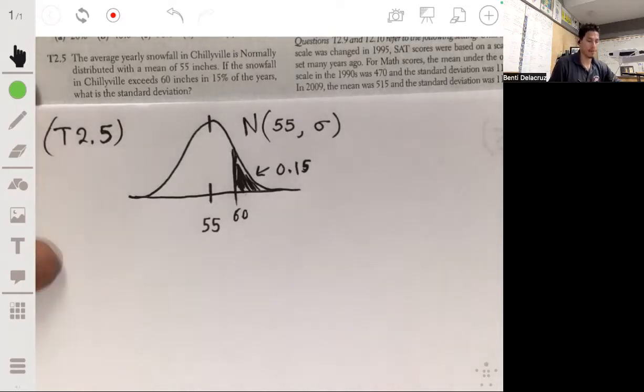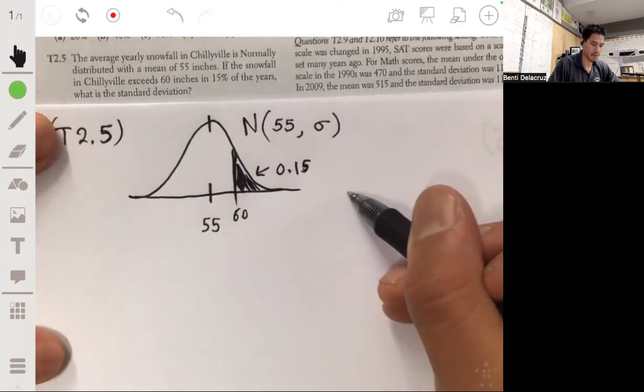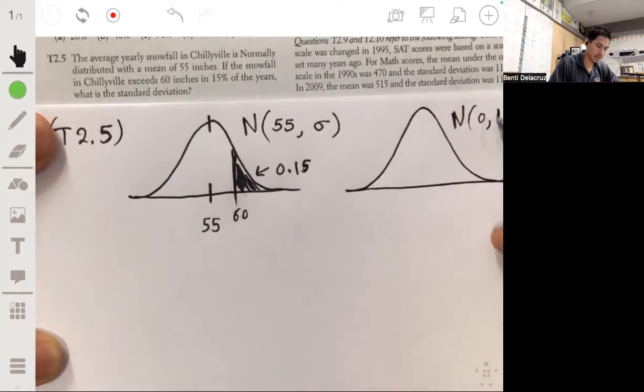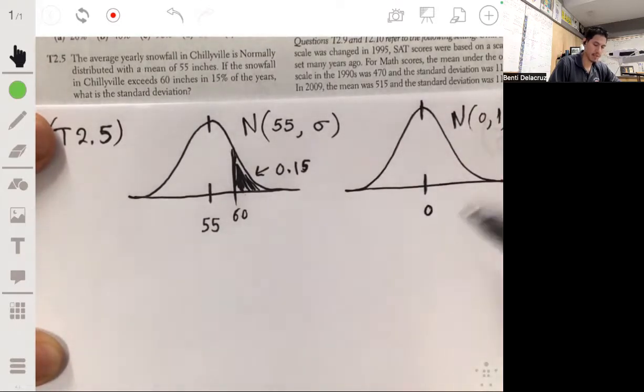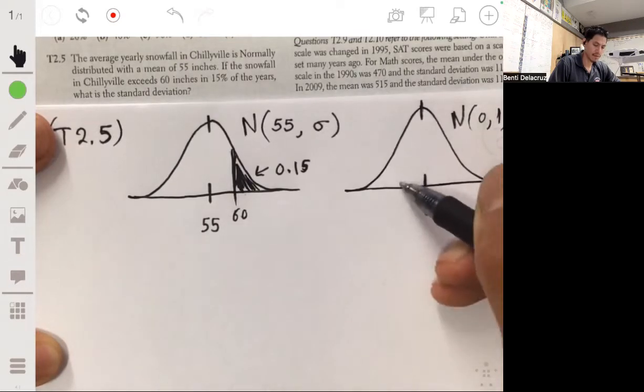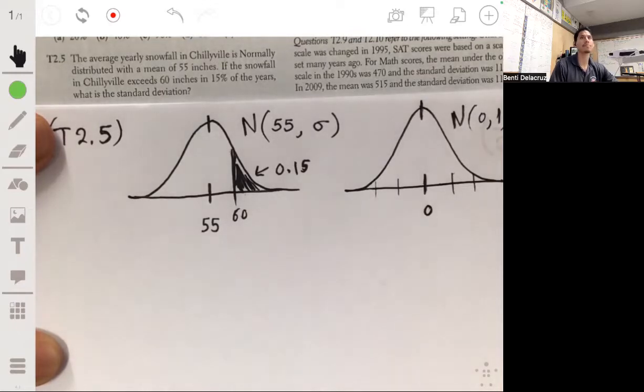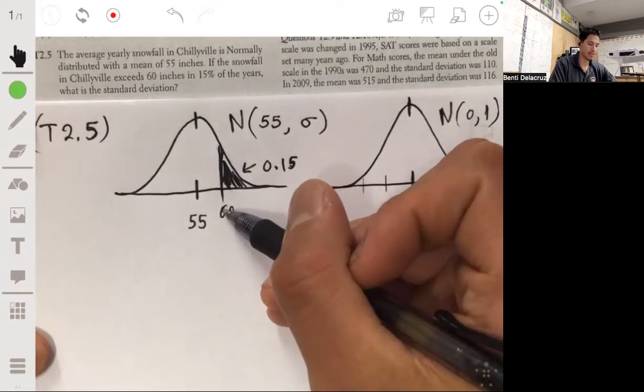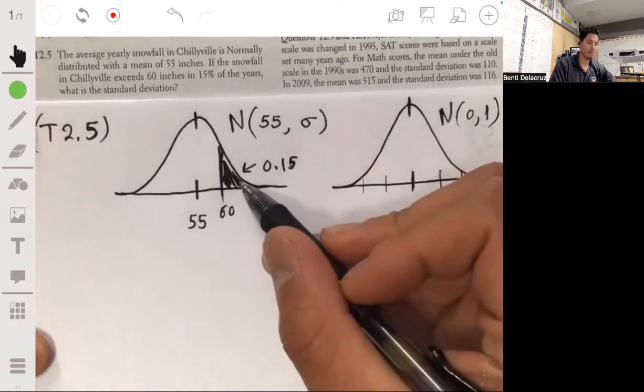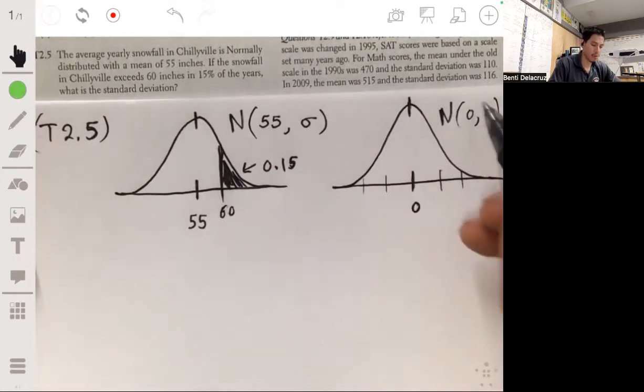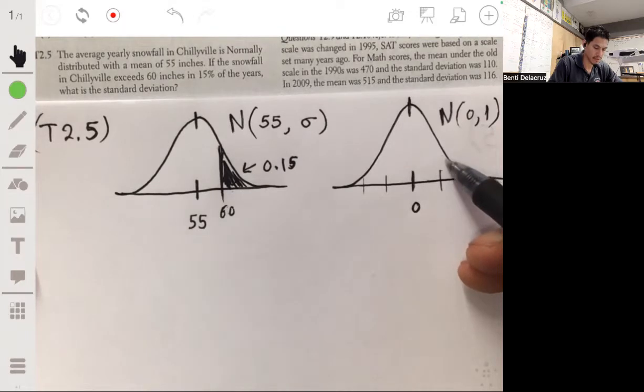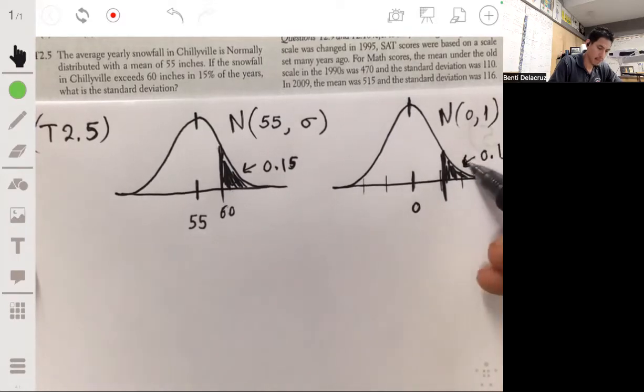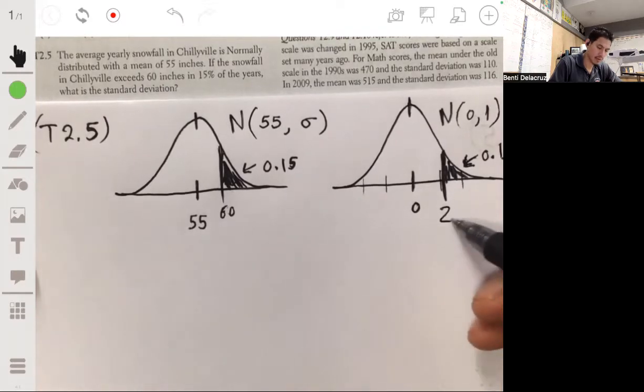Remember the standard normal distribution is normal with a mean of zero and a standard deviation of one. So the middle here is zero and these are essentially z-scores. Now what we want to do is figure out what z-value corresponds to this 60 so that it would give you the same area to the right. So you want to find the z-score that corresponds to 0.15 area to the right.